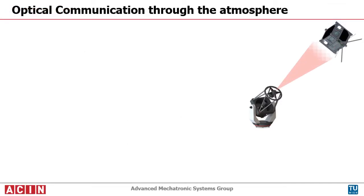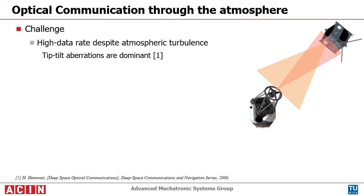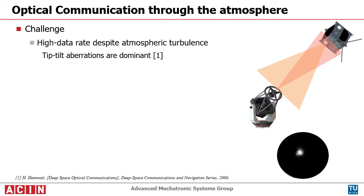Free Space Optical Satellite Communication is a key technology for our modern world. A major challenge is the influence of atmospheric turbulence on the laser beam, limiting the achievable data rate. Time and spatial variations of the refractive index cause the beam to move around. This movement results in tip-tilt aberrations, which are the dominant error source.